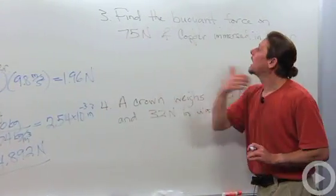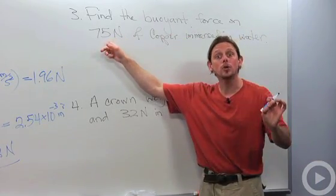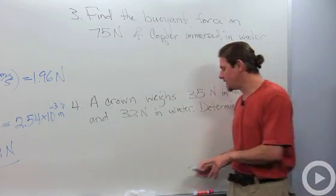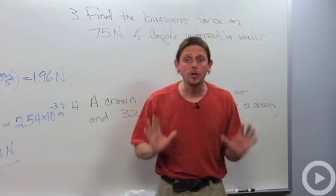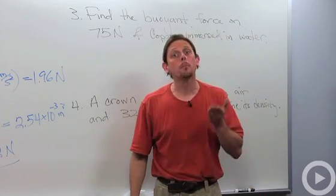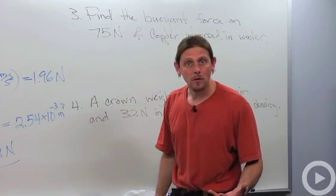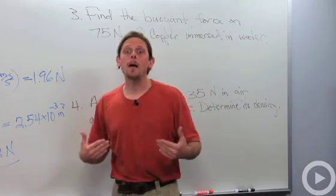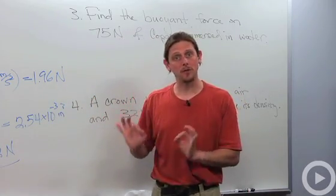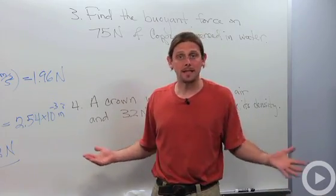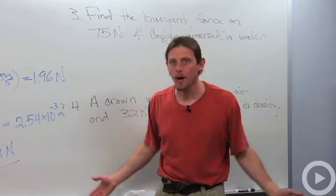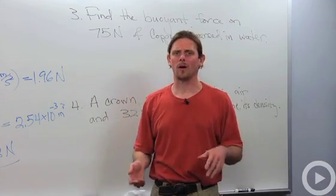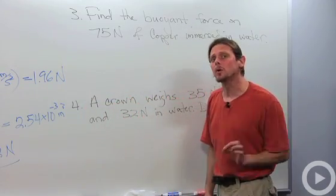It's asking for the buoyant force on 75 Newtons of copper immersed in water. We're going to use the unit to determine what piece of information the problem is giving us. Newtons is a force, so since they've told us that this piece of copper is 75 Newtons, that means that its weight is 75 Newtons. We could turn that into the mass by dividing by 9.8 meters per second squared, and then turn it into problem number two, and do all that business and turn it into problem number one again. But that seems like a lot of work and I'm tired. So let's do it a different way.